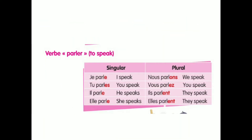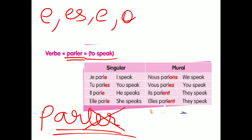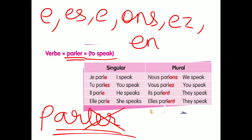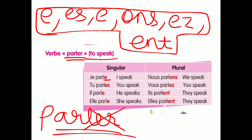The second example is PARLER, which means 'to speak'. The word given to you is PARLER. You remove the ER, and what remains is the radical PARL. Then you add E, ES, E, ONS, EZ, and ENT. Just remember these seven endings — E, ES, E, ONS, EZ, ENT — and you will be able to solve any ER verb except ALLER.